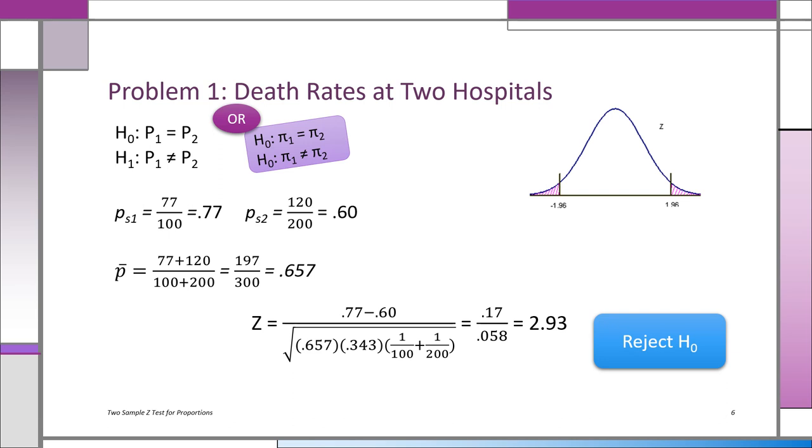So it's a two-tailed test, and we put the 0.025 in the right tail and 0.025 in the left tail. By now you know that we took the alpha of 0.05, split it into two, so you have 0.025 in the right and 0.025 in the left tail.